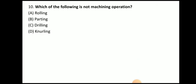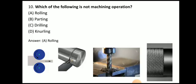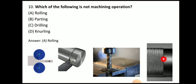The last question: which of the following is not a machining operation? The answer is rolling. In the rolling process, we reduce the thickness of a slab with the help of rolls — material is not removed in the form of chips. Parting and drilling are machining operations where material is removed. Knurling is also a type of machining process. So rolling is not a type of machining process.